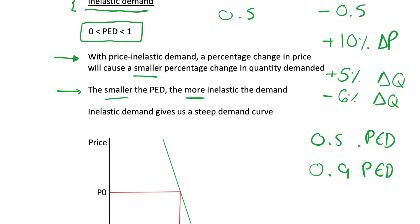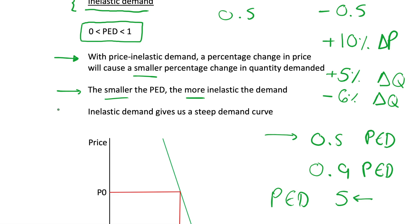This should make sense because elastic price elasticity is greater than one. A PED of 5 is going to be very elastic, and as we get smaller towards 0.5 we're getting more and more inelastic. This should all make sense if you've seen the previous video.